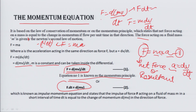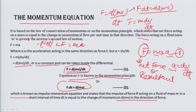F·dt equals d(mv). This is known as the impulse-momentum equation. It states that the impulse of force F acting on a fluid of mass m in a short interval of time dt is equal to the change of momentum d(mv) in the direction of the force.